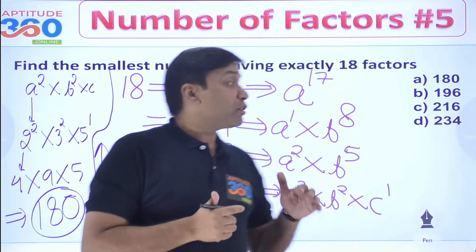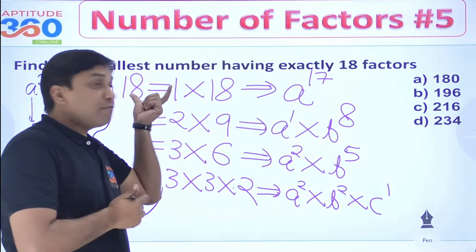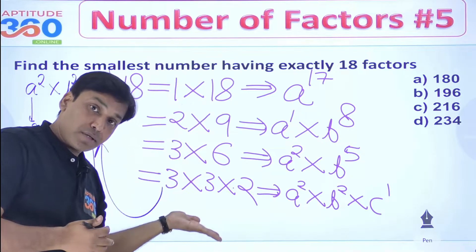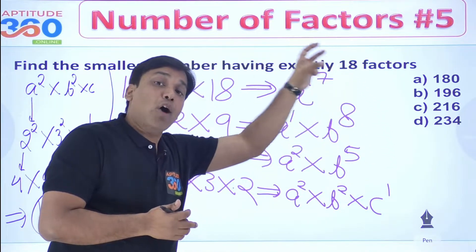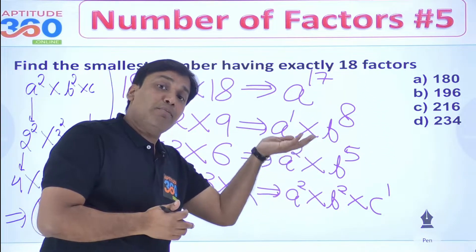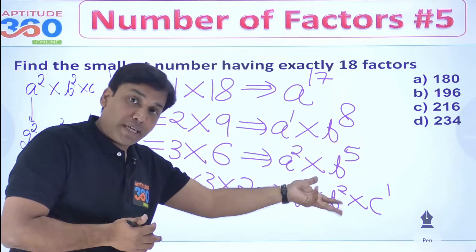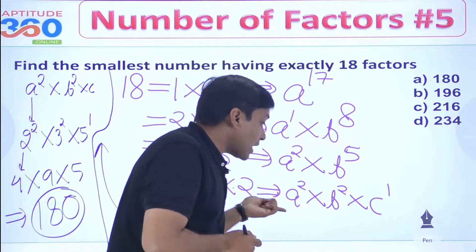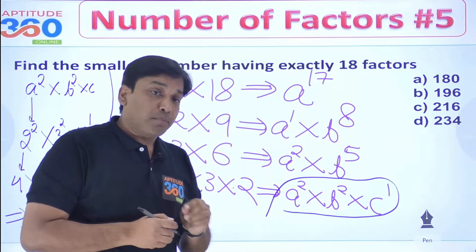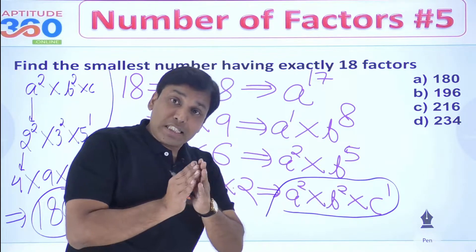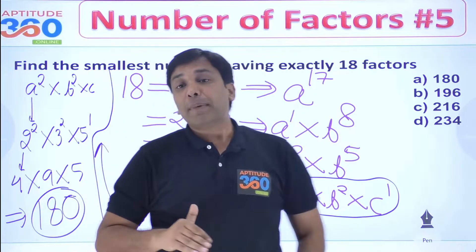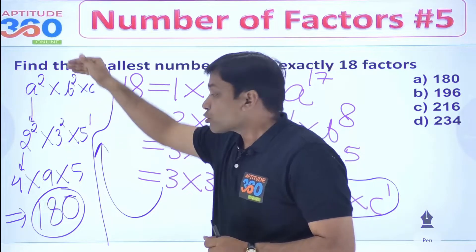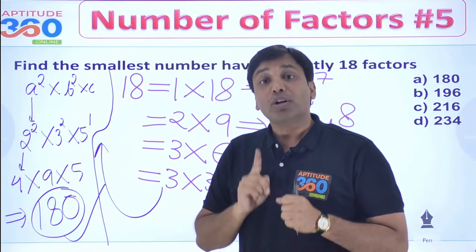What I did in this question: first I found out how many ways you can write 18 as a product of numbers. Then I figured out how the prime factorization could look for each of those outcomes. Since they usually ask for the minimum possible number, we pick the form with the most prime bases and assign smaller primes to higher powers. That is your answer.